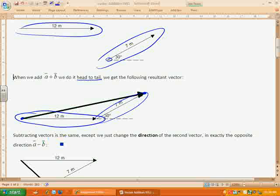Now, when we subtract vectors, it's exactly the same, except we're going to change the direction of the vector that's being subtracted. Okay, so essentially, vector B looked like this, where it was going up at 30 degrees.